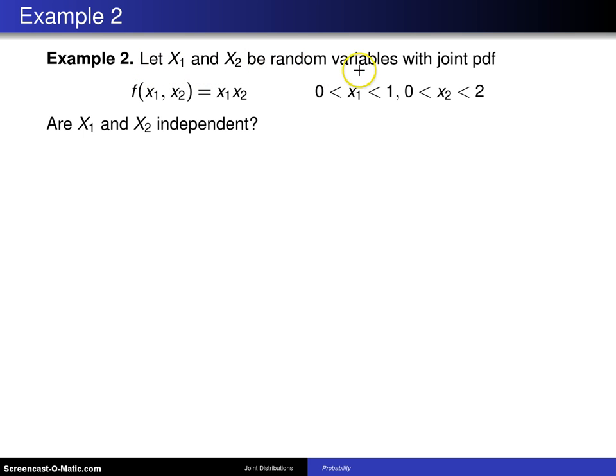Let x1 and x2 be random variables with joint probability density function f(x1, x2) equals x1 times x2 on the support 0 less than x1 less than 1 and 0 less than x2 less than 2. Are the random variables x1 and x2 independent?